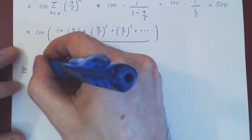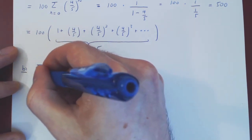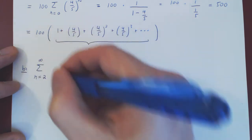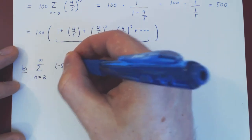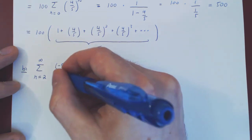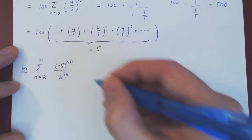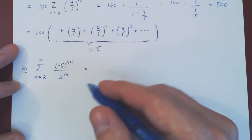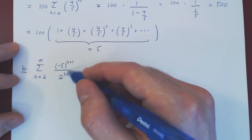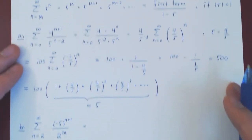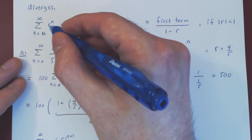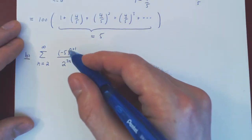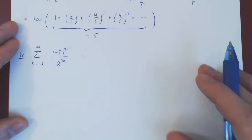Let's look at another example. What if we are summing with n beginning at 2, up to infinity, negative 5 to the n+1, over 2 to the 3n? Again, this is not exactly in the form of a geometric series — we're supposed to be summing the nth power of a fixed number — but with a little bit of algebra, we can make this happen.